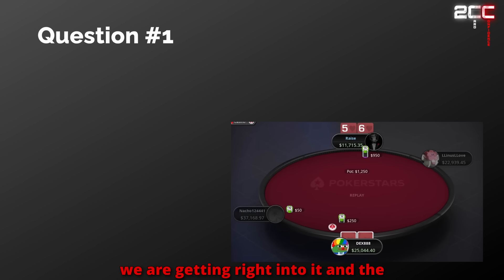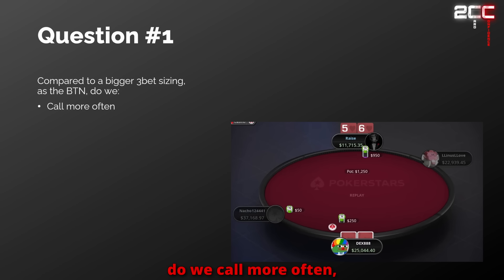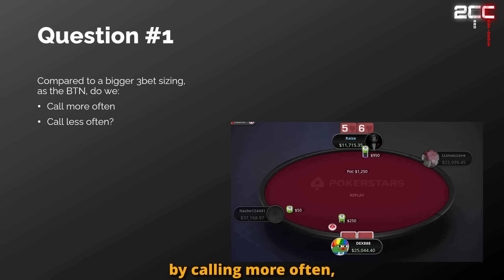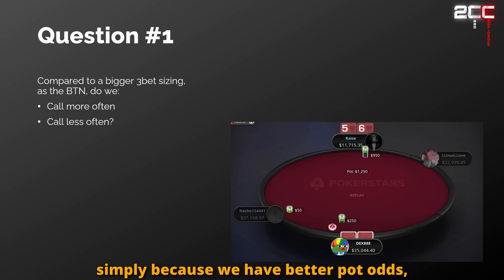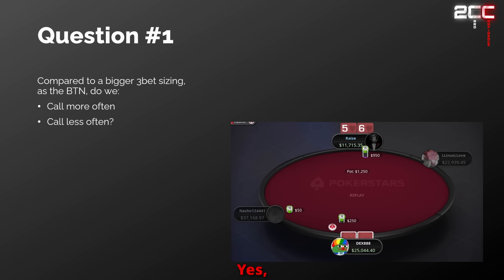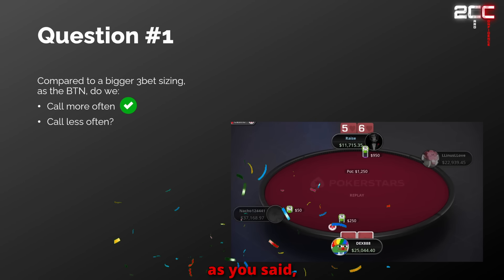The first question: compared to facing a bigger three-bet sizing as the button, do we call more often or less often against this smaller three-bet? Against a smaller three-bet, we adjust by calling more often, simply because we have better pot odds. At the same time, we might fold a little bit less since there is less dead money to capitalize on. That is correct — because the sizing is smaller, we're getting a better price, giving us the right odds to call a lot more hands.